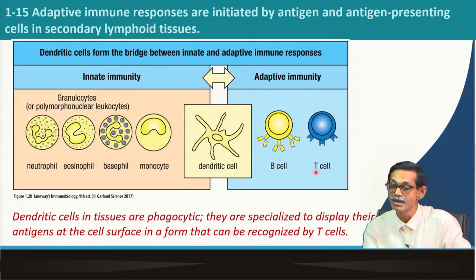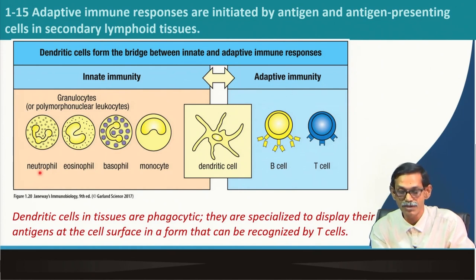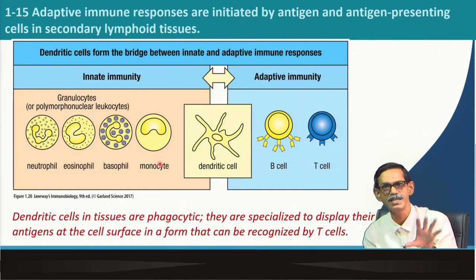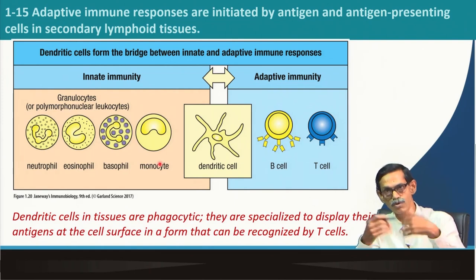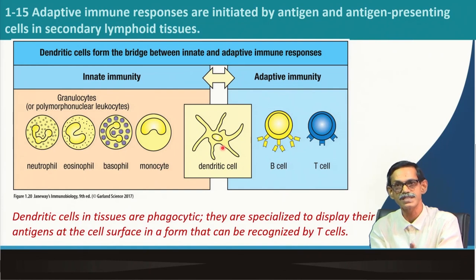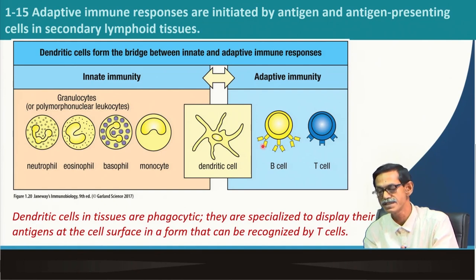Dendritic cells are the middle man between innate immunity and adaptive immunity. In innate immunity, neutrophils, eosinophils, basophils, and monocytes — called macrophages in tissue — are taking care: eating, phagocytosing, killing, and releasing cytokines and chemokines that recruit more neutrophils and macrophages to handle infection at the site. Meanwhile, dendritic cells at the site capture some antigen and bring it to the lymph node, where B cells and T cells can see and respond to it.